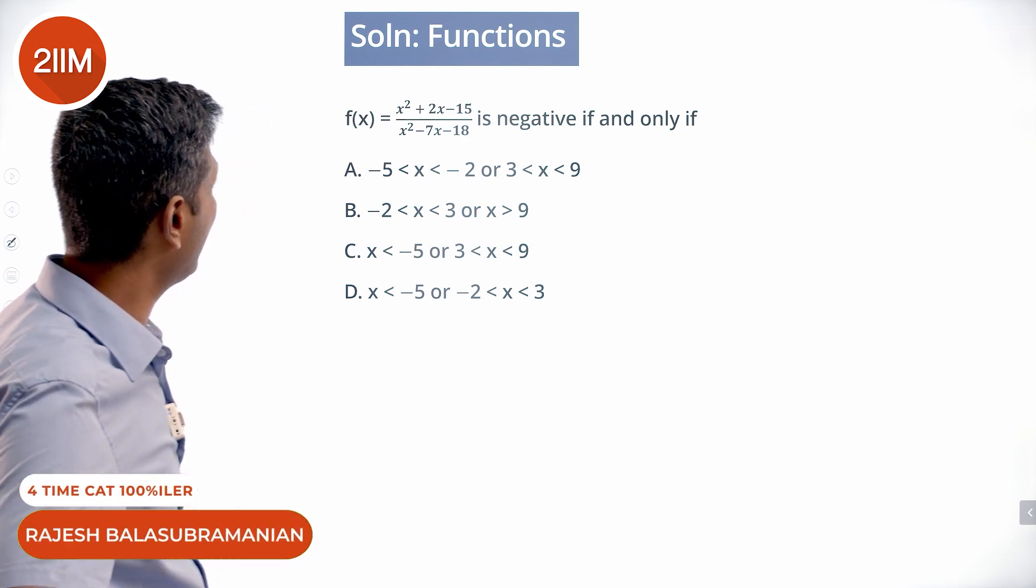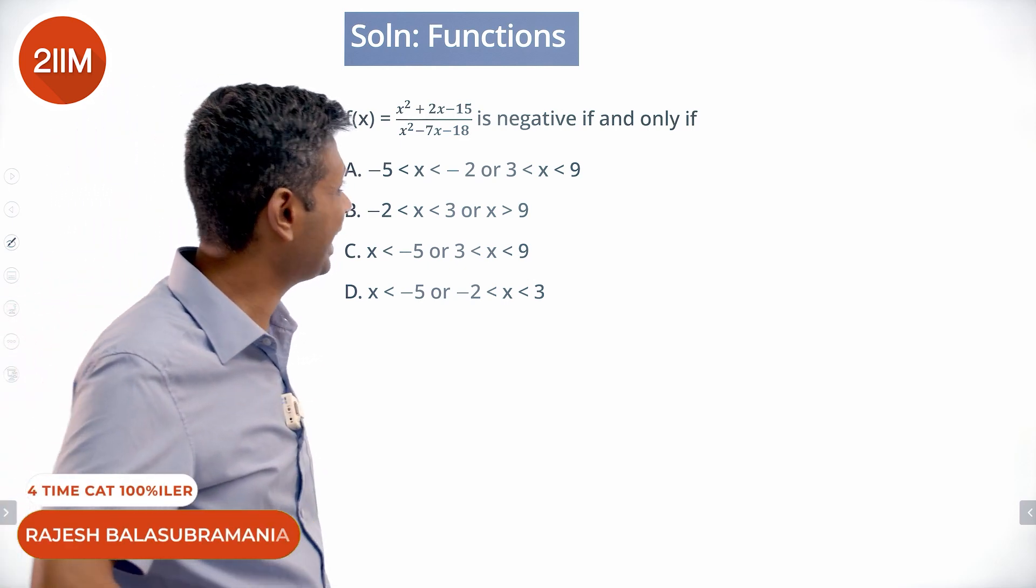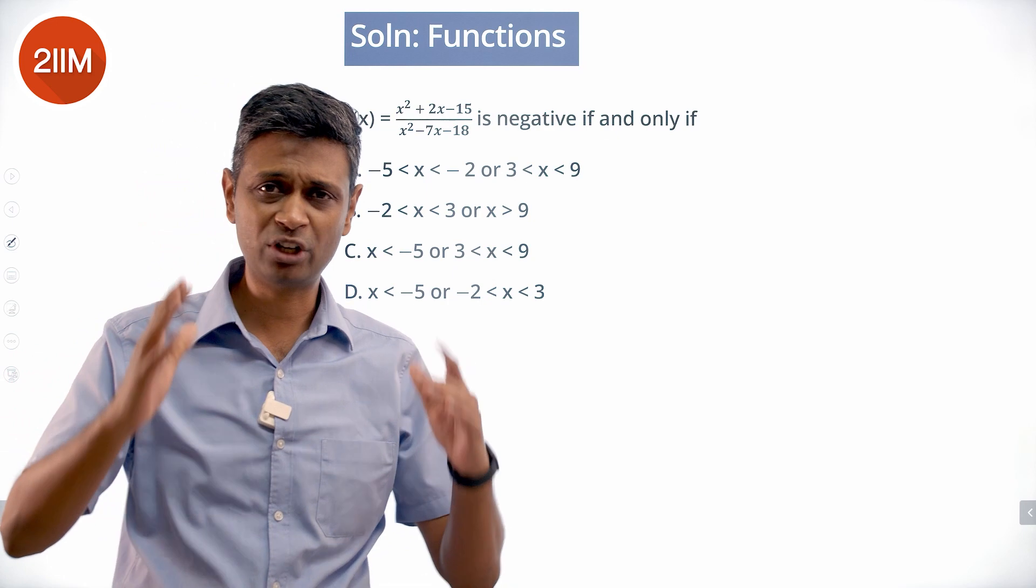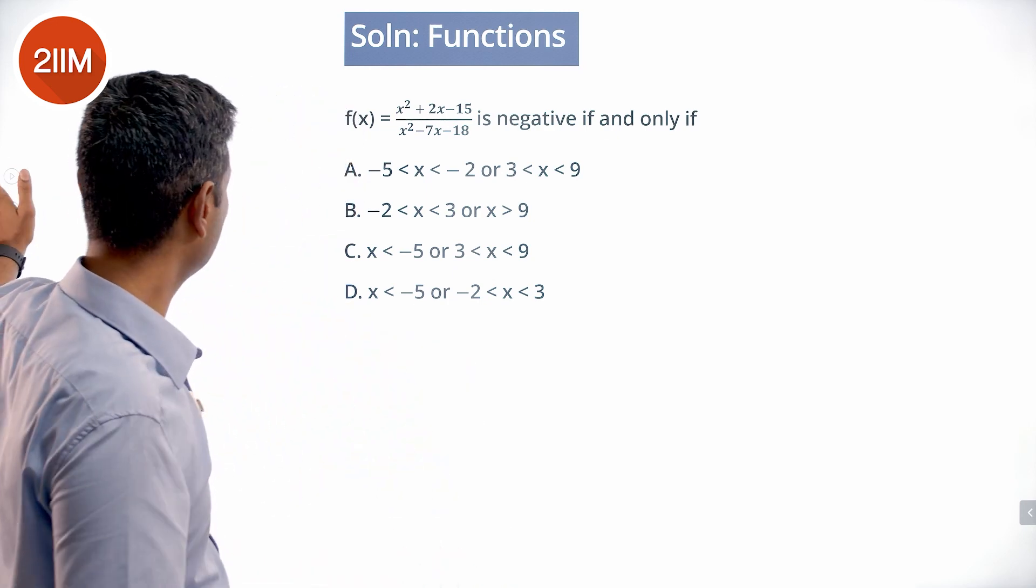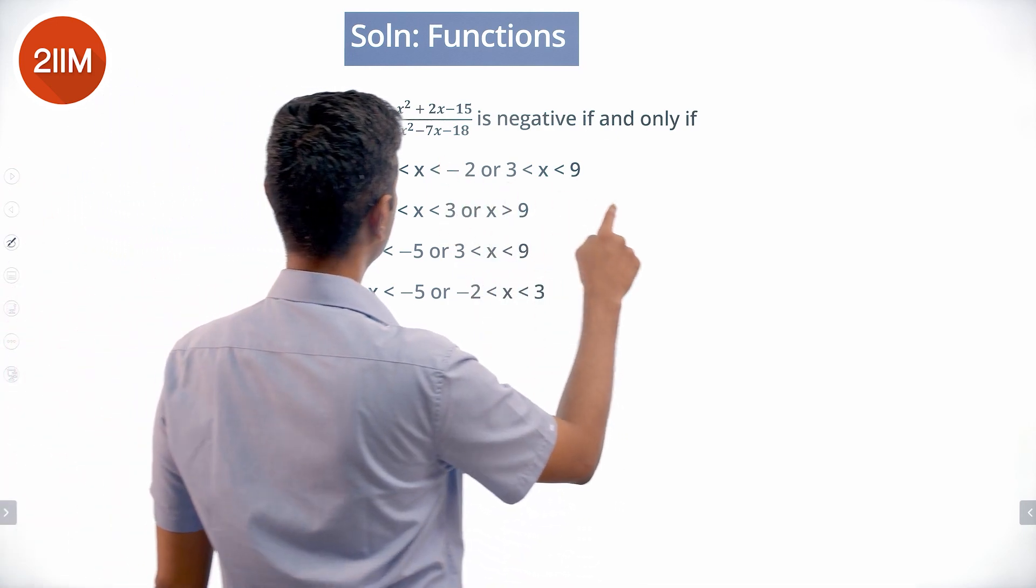We need to find when (x² + 2x - 15)/(x² - 7x - 18) is negative if and only if. To solve this inequality, we set it less than 0: (x² + 2x - 15)/(x² - 7x - 18) < 0.